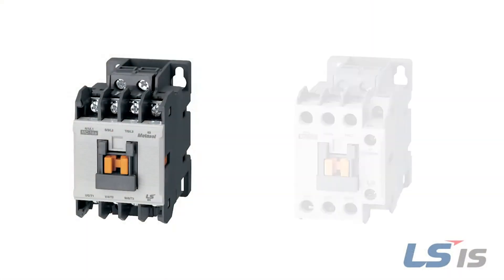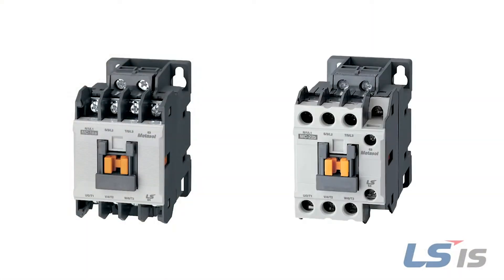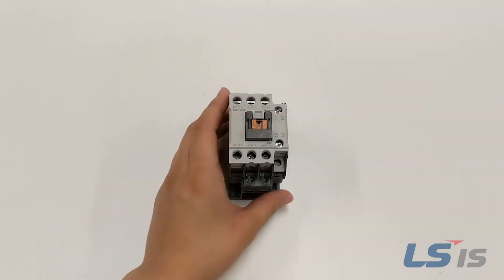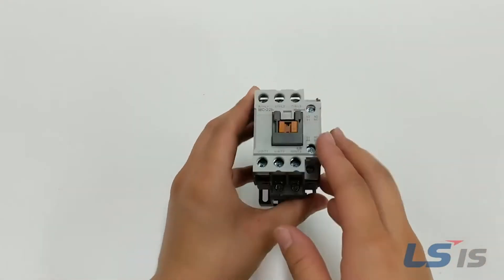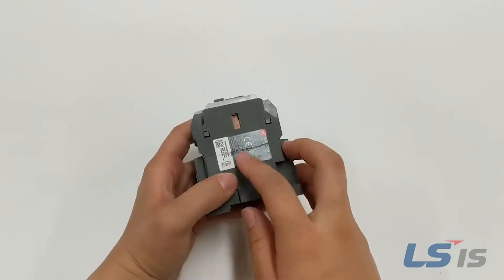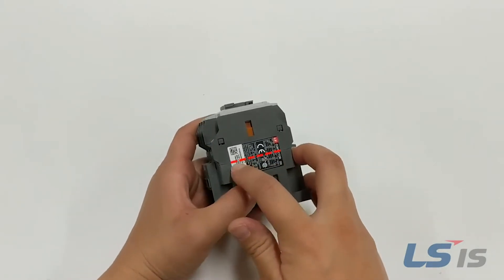For the MC 18M frame to 22M frame as well as MR 4 to 8 frame contactors, remove the contactor from the box and place on a flat surface. Next, cut the nameplate label along the seam.